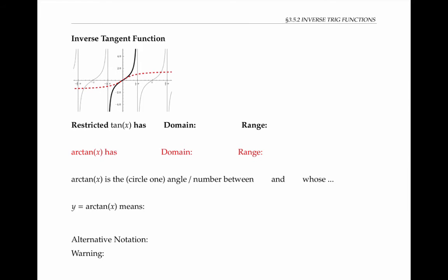Finally, let's take a look at the inverse tangent function. Here's a graph of tangent in black. These vertical lines aren't really part of the function — they're just vertical asymptotes. So in order to get an actual function when we flip over the line y equals x, we take just one piece of the tangent function.